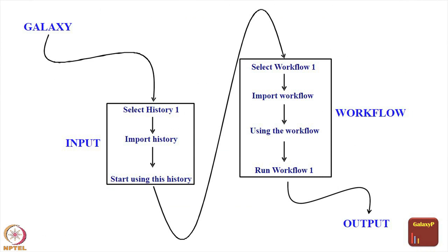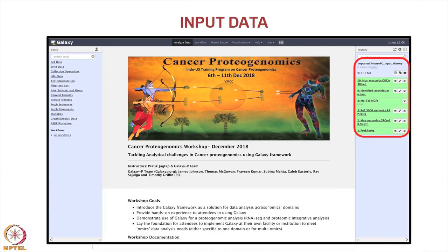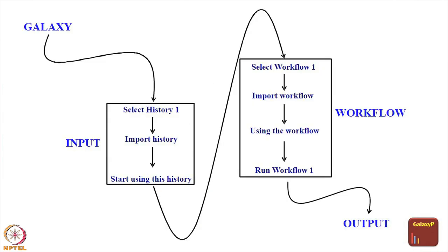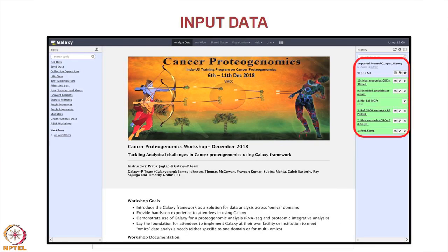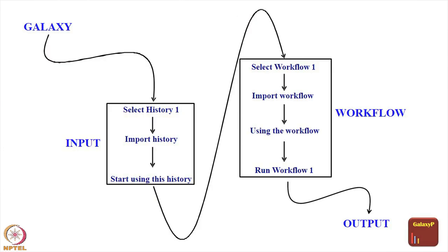Galaxy is the web-based interface. You can select the history — we are selecting the input files, the five files that I talked about earlier. Once you import the history you can start using it, which means your history becomes active, and then you select a workflow.